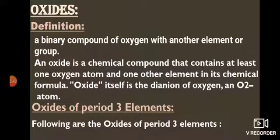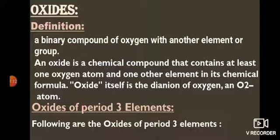What are oxides? Oxides are the binary compound of oxygen with another element or group of elements. An oxide is a chemical compound that contains at least one oxygen atom and one other element in its chemical formula. Oxide itself is a dianion of oxygen, meaning that oxygen in an oxide carries a minus 2 charge.